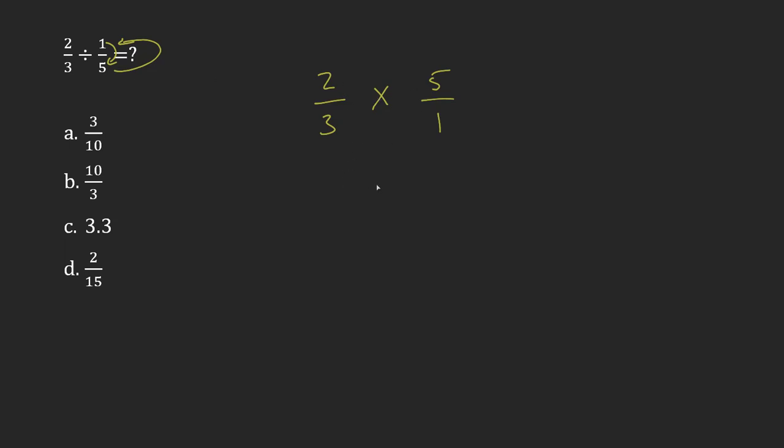Now it's very simple, because when you're multiplying fractions, you don't have to have a common denominator. You just multiply the tops, you multiply the bottoms, and so it ends up becoming 2 times 5 over 3 times 1,